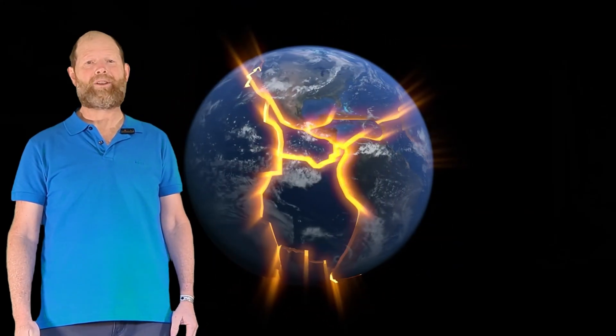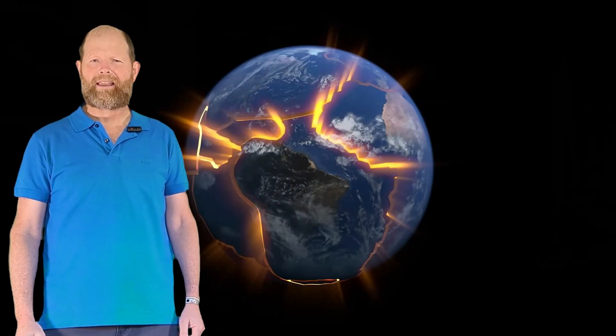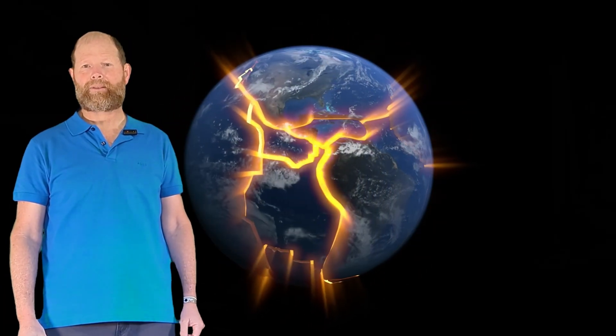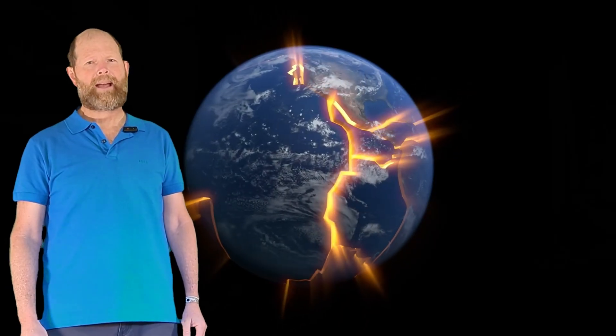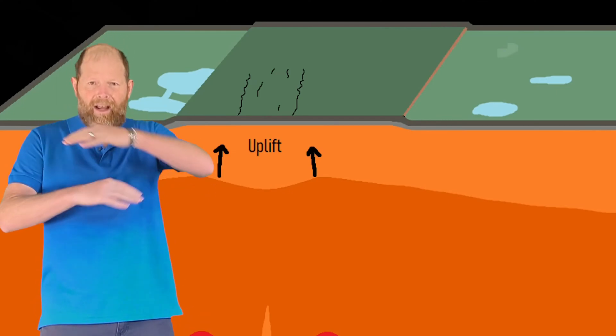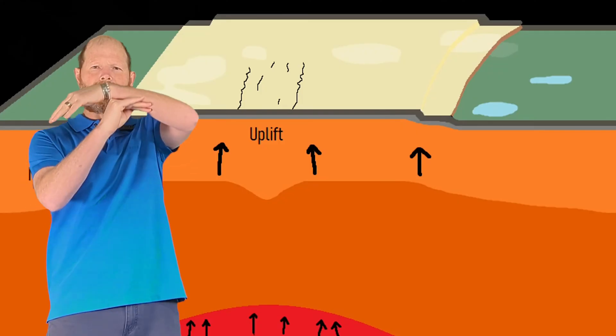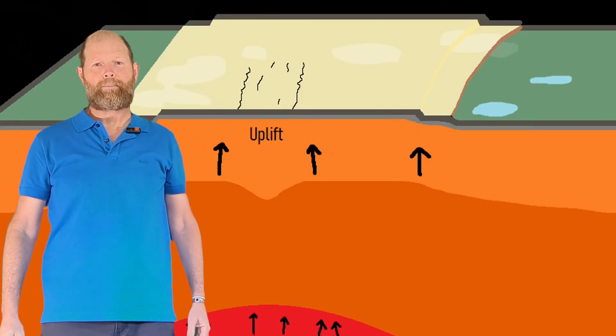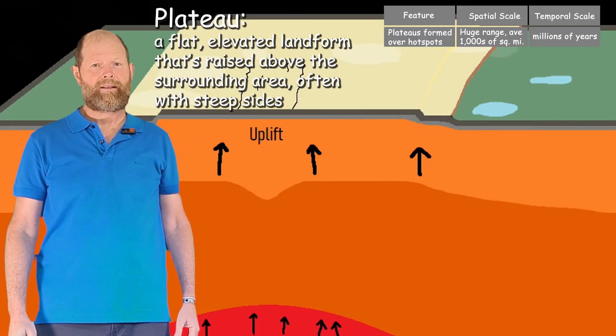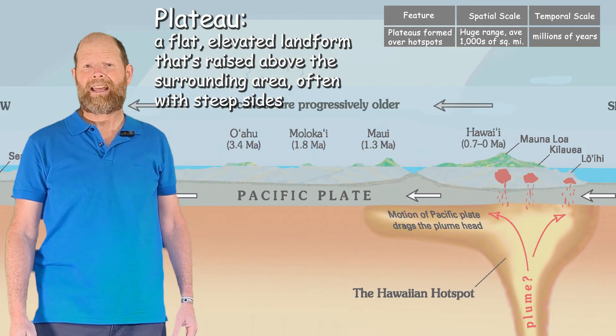Now that we know about plate boundaries and how they contribute to the incredible variety of features on the Earth's surface, let's look at one more way that the Earth's mantle impacts the surface of the Earth. The Earth's mantle can have hot spots where magma rises, often called magma plumes, and then raise large sections of the Earth by pushing from underneath. This is one way that plateaus can be formed.